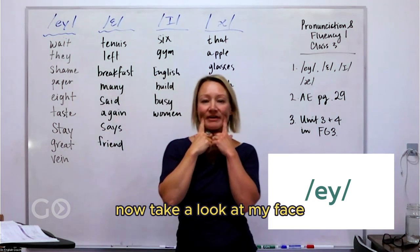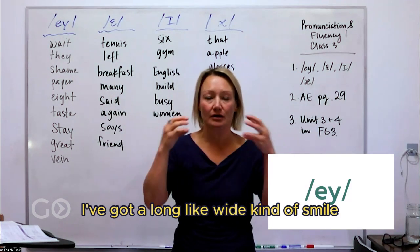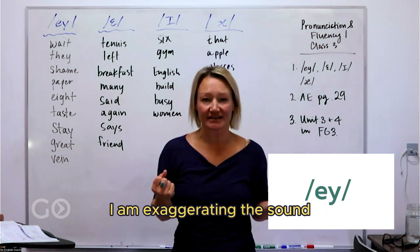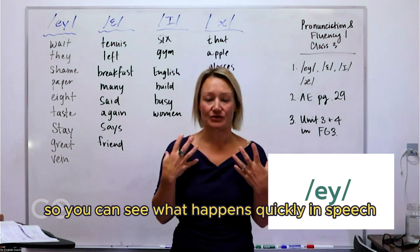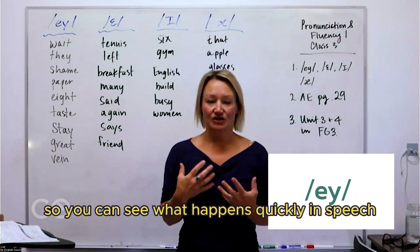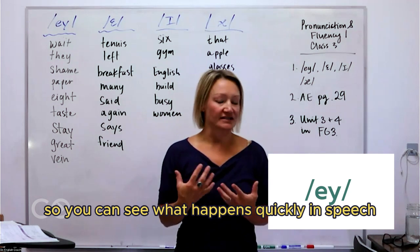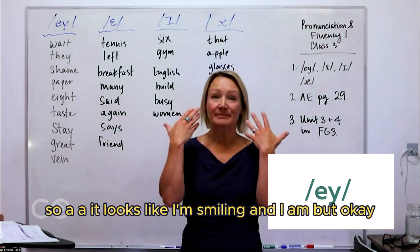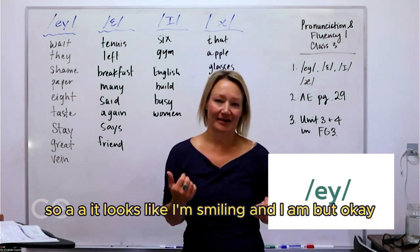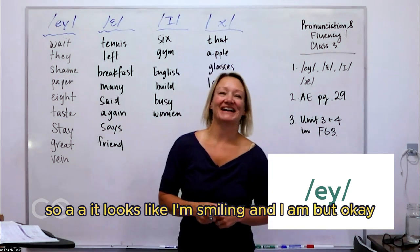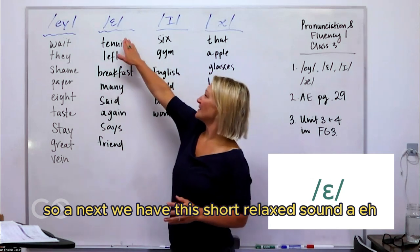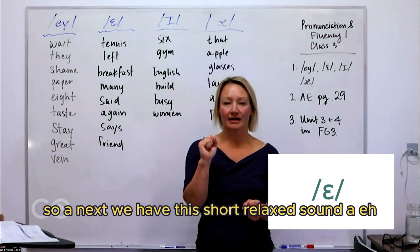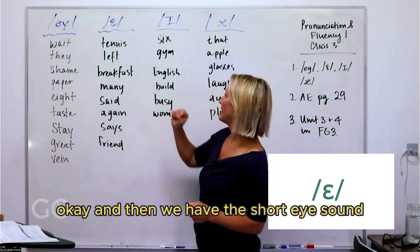Now, take a look at my face. I've got a long, wide kind of smile. I am exaggerating the sound so you can see what happens quickly in speech. It looks like I'm smiling. Next, we have this short, relaxed sound — eh, eh. And then we have the short I sound.